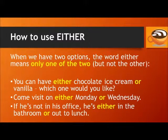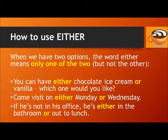First, let's learn how to use either. When we have two options, the word either means only one of the two, but not the other. For example, you can have either chocolate ice cream or vanilla — which one would you like? Come visit on either Monday or Wednesday. If he's not in his office, he's either in the bathroom or out to lunch.